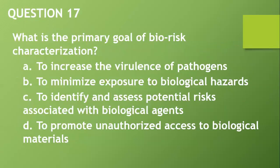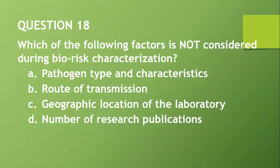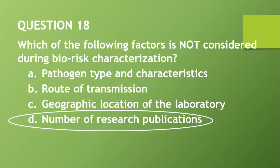Question seventeen: What is the primary goal of bio-risk characterization? A, to increase the virulence of pathogens. B, to minimize exposure to biological hazards. C, to identify and assess potential risks associated with biological agents. D, to promote unauthorized access to biological materials. The answer is C. Question eighteen: Which factor is not considered during bio-risk characterization? A, pathogen type and characteristics. B, route of transmission. C, geographic location of the laboratory. D, number of research publications. The answer is D — number of research publications.